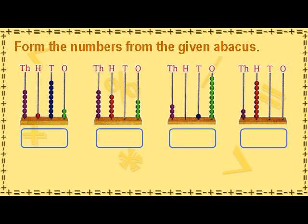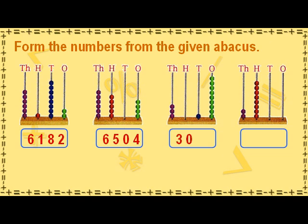Form the number from the given Abacus. The numeral for the given Abacus is 6182. The numeral for the given Abacus is 6504. The numeral for the given Abacus is 3019. The numeral for the given Abacus is 2800.